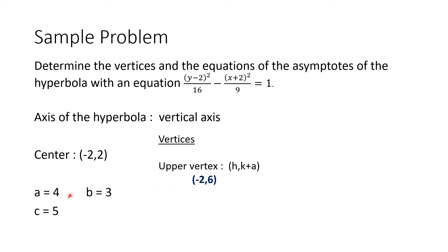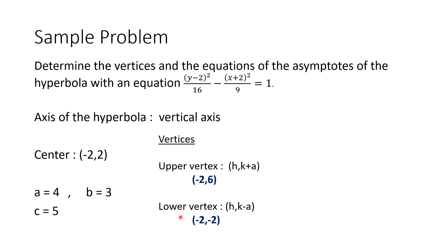We add 4 units to the k coordinate, so h remains negative 2 and we get 6. For the lower vertex, we have (h, k minus a): subtracting 4 from 2 gives us the coordinates (negative 2, negative 2). These are the two coordinates of our vertices.